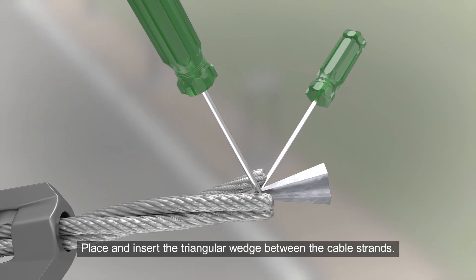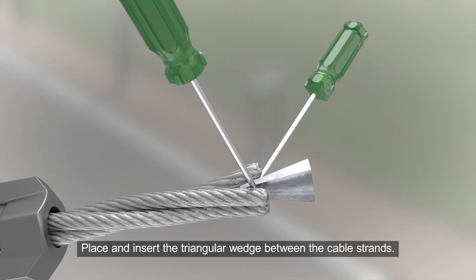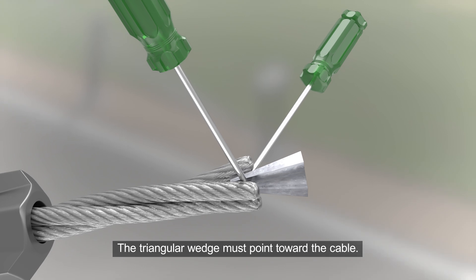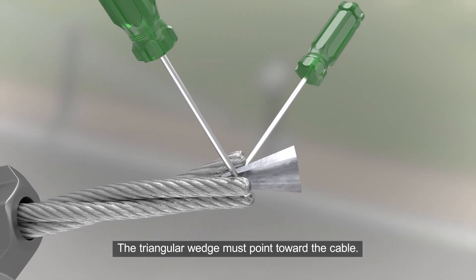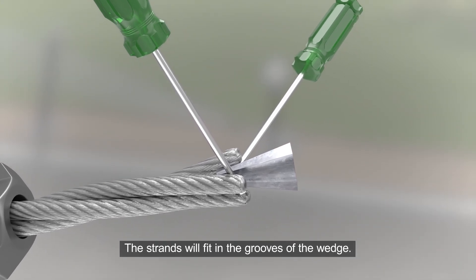Place and insert the triangular wedge between the cable strands. The triangular wedge must point toward the cable. The strands will fit in the grooves of the wedge.